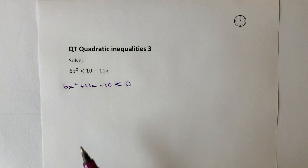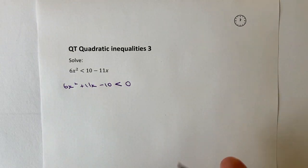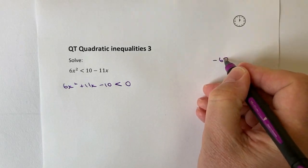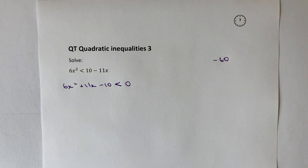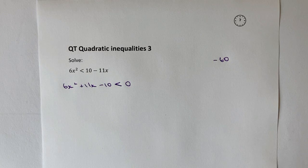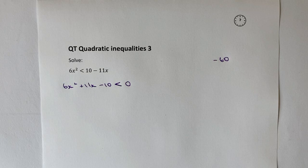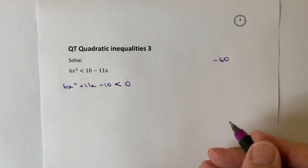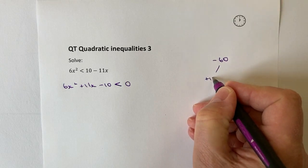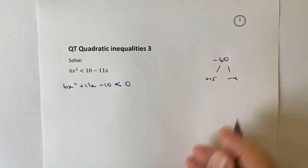6 times minus 10 is going to give me minus 60. And what I'm looking for is two factors of minus 60 that when I multiply them together make minus 60 and when I add them together make plus 11. Well, those two factors are going to be plus 15 and minus 4.